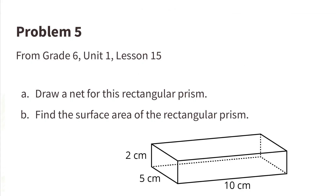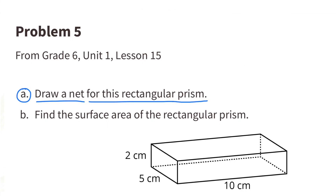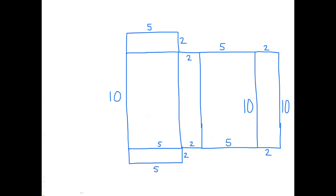Number 5. A: draw a net for this rectangular prism. Here's the net for the rectangular prism. It has the top, the back, the bottom, the front, the right side, and the left side.